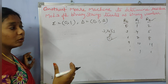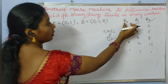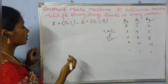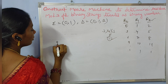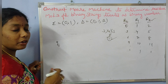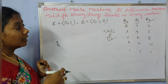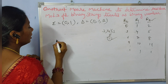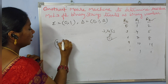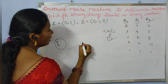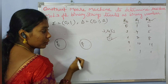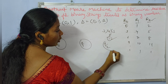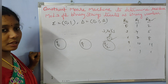We have three conditions, one condition per state. Q0 represents the state with remainder 0, Q1 represents the state with remainder 1, and Q2 represents the state with remainder 2.